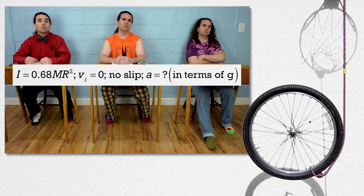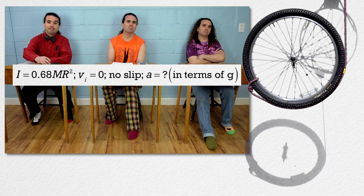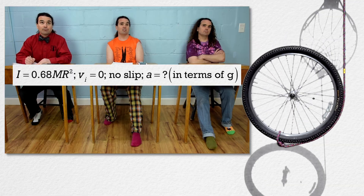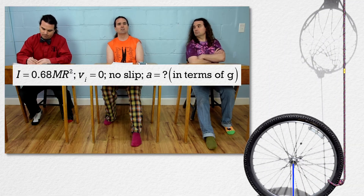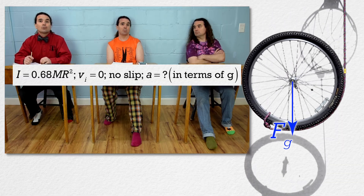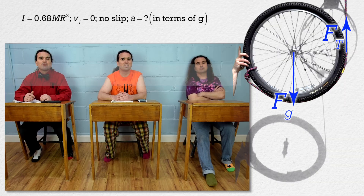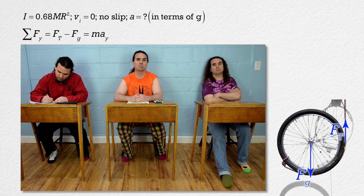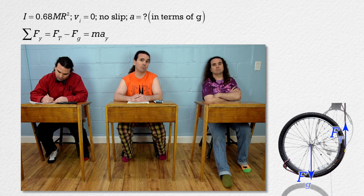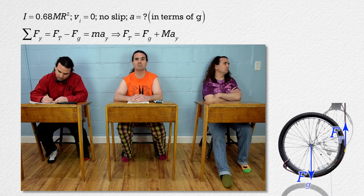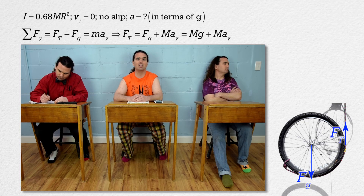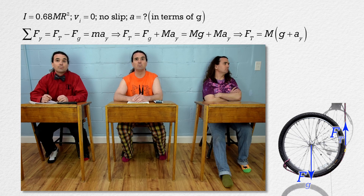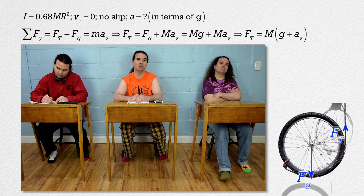The acceleration of the wheel — we'll need to draw a free body diagram and sum the forces. The force of gravity on the wheel acts down at the center of mass. The force of tension from the rope acts up where the rope last touches the wheel. The net force in the y direction equals the force of tension minus the force of gravity, which equals mass times acceleration in the y direction. The force of tension equals the mass of the wheel times the quantity acceleration due to gravity plus acceleration in the y direction.